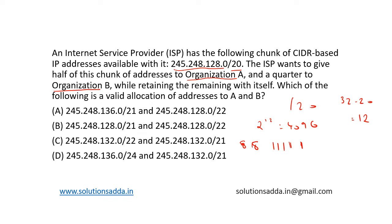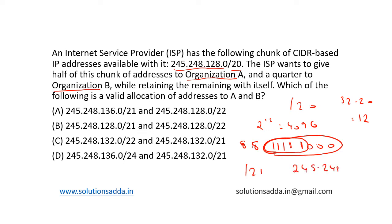So this is given to organization A. The address will now look like: 8 bits, plus 8 bits, plus this additional bit, giving us slash 21. The address will be 245.248.128.0/21. So this is a potential candidate as the answer.